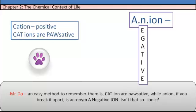Cations—cat ions—are pawsitive, while anion, if you break it apart, you get 'a negative ion.' Isn't that ironic?